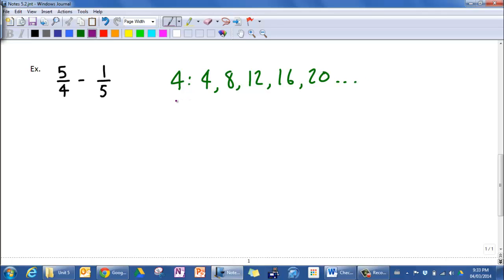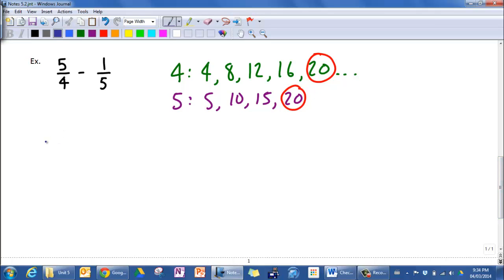Multiples of five include five, ten, fifteen, twenty. And I'm going to stop right there because I found a multiple that they have in common. So I'm going to change each of these fractions so that they're equivalent to fractions that are over twenty.